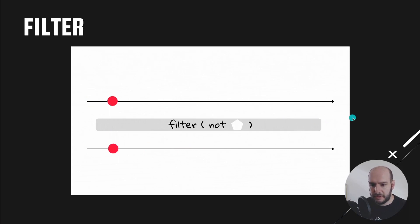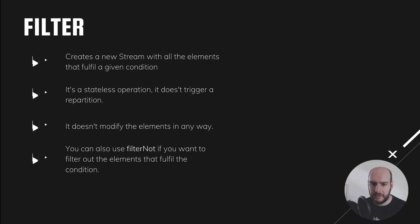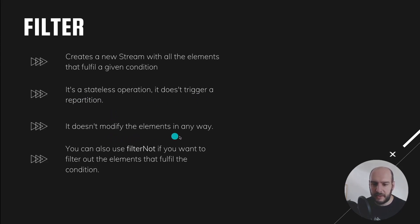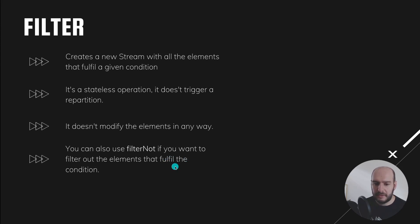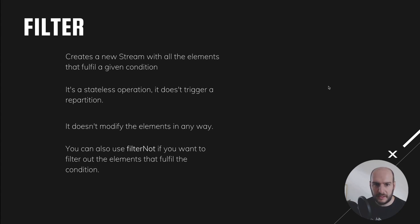The filter operation filters elements based on a condition. In this case we're saying we don't want pentagons — as you can see in the diagram, the pentagons are being filtered out and we keep the ones that are not pentagons. The filter operation creates a new stream with all elements that fulfill the given condition. It's a stateless operation, it doesn't trigger a repartition, it doesn't modify the elements, and you can use filterNot if you want to negate the predicate.